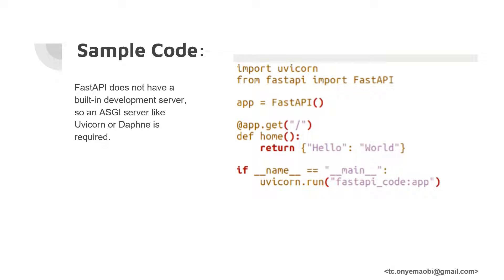This is a sample code of FastAPI. FastAPI by default does not have a built-in development server, so an ASGI server like Uvicorn or Daphne is required. This sample code shows how we import Uvicorn from FastAPI, then instantiate our app with the FastAPI library, specify endpoints — in this case a hello world endpoint — and then Uvicorn runs this under the development environment.